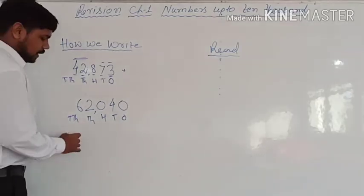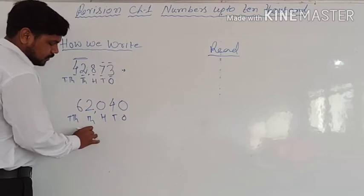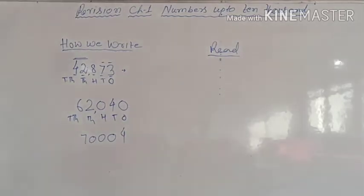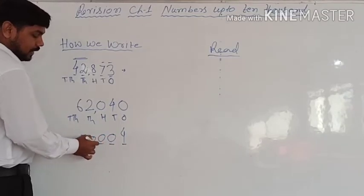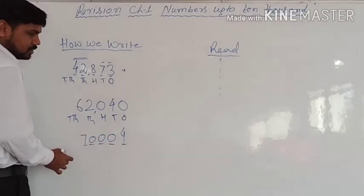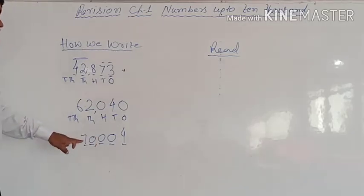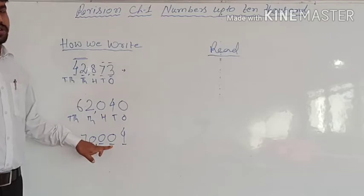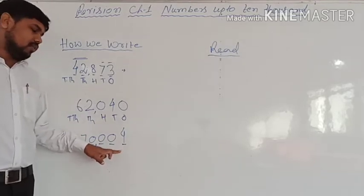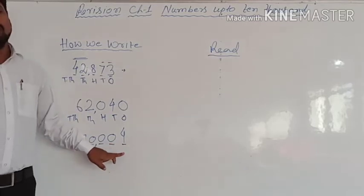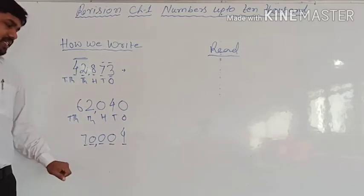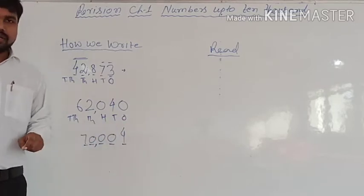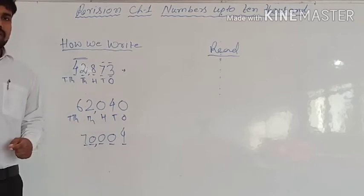One more number: 70,004. Ones place: 4. Tens place: 0. Hundreds place: 0. Thousands place: 0. Ten-thousands: 7, so 70,000. In ones place only we have the number 4. So we read this number as seventy thousand and four — 70,004.